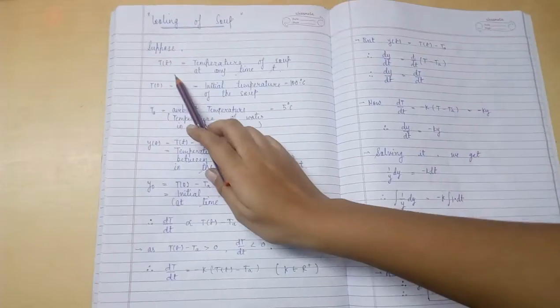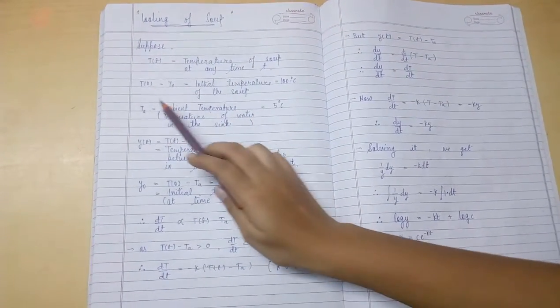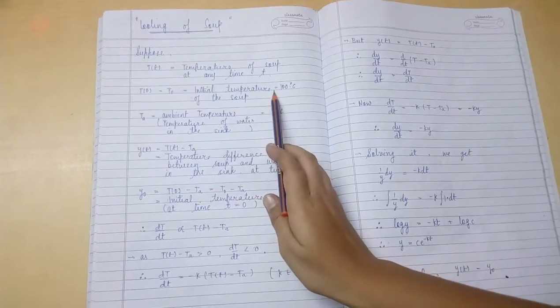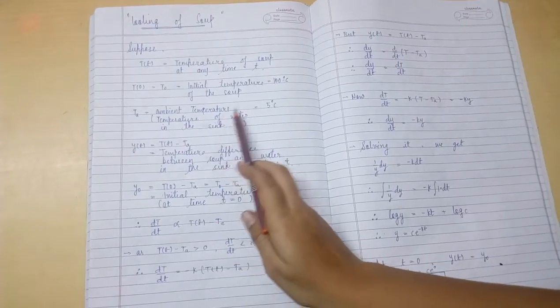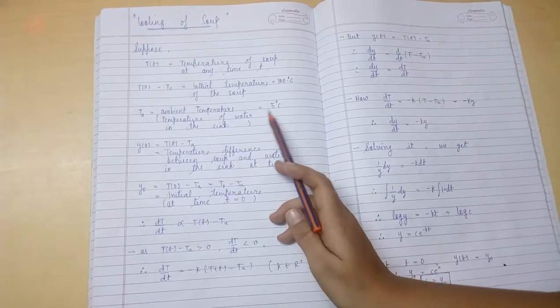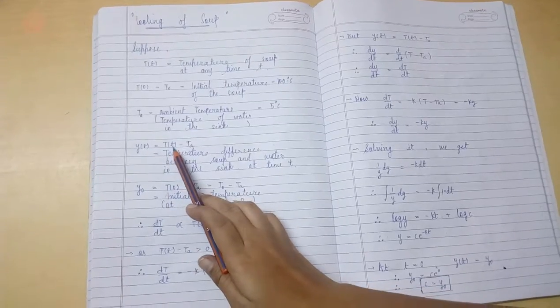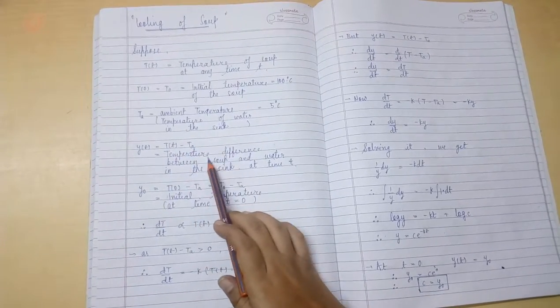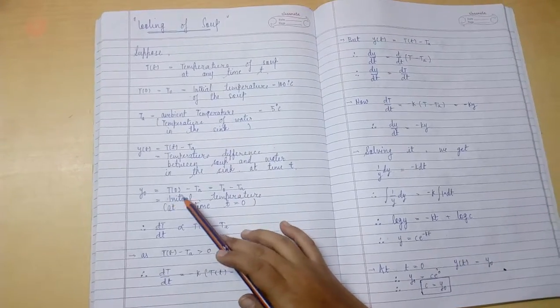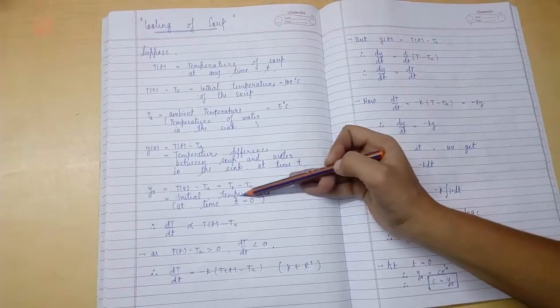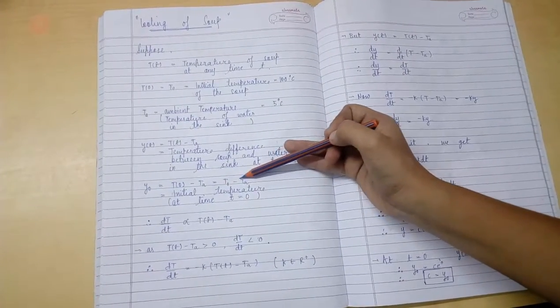Suppose T(t) is equal to temperature of soup at any time t. T0 is equal to initial temperature of the soup, i.e. 100 degree centigrade. Ambient temperature, i.e. the temperature of the water in the sink is 5 degree centigrade. Y(t) is equal to T(t) minus Ta, the temperature difference between soup and water. Y(0) is equal to initial temperature difference at time t is equal to 0. It is equal to T0 minus Ta.